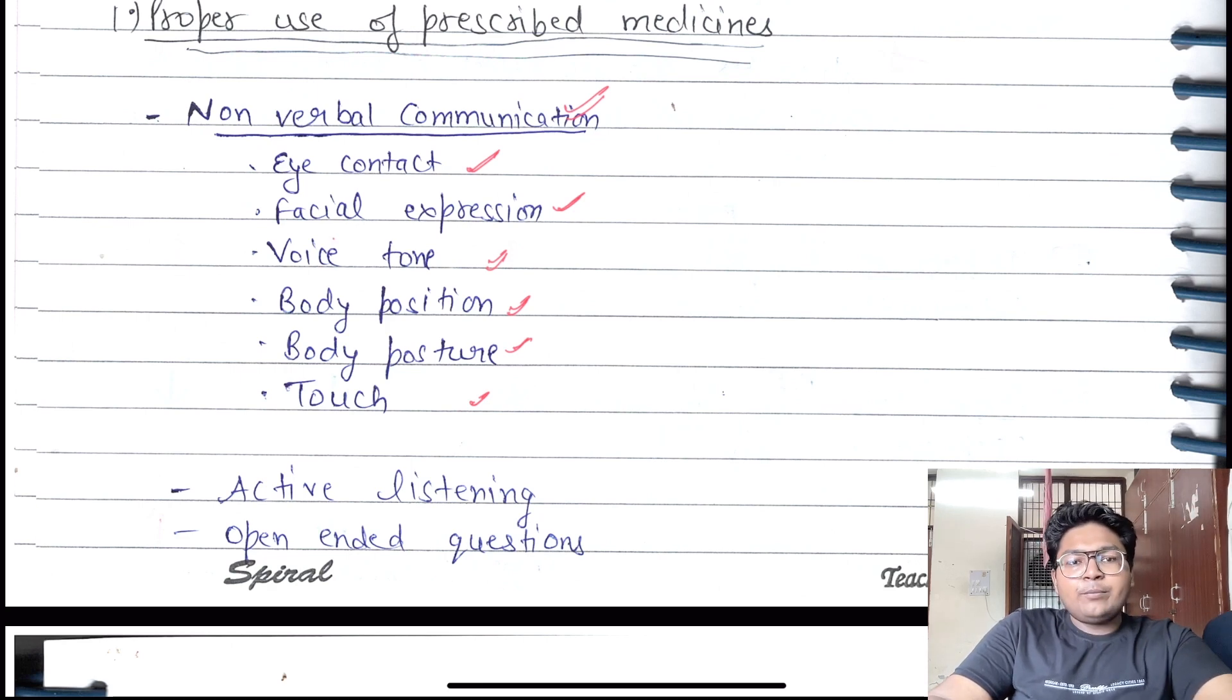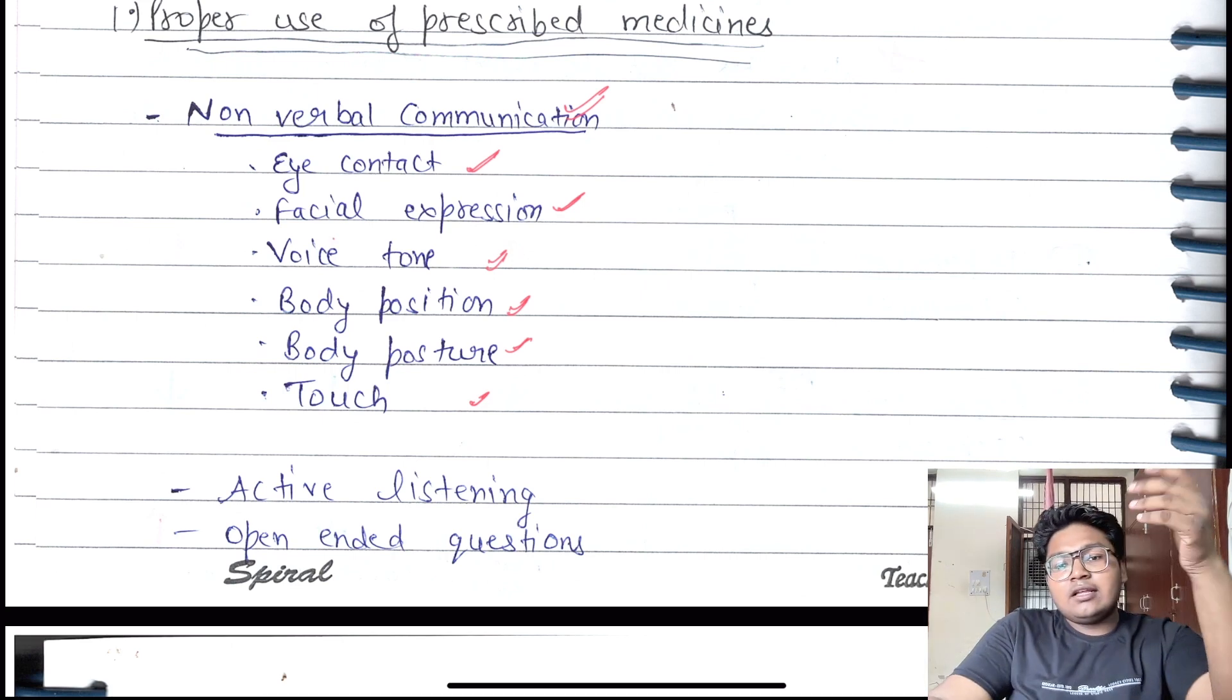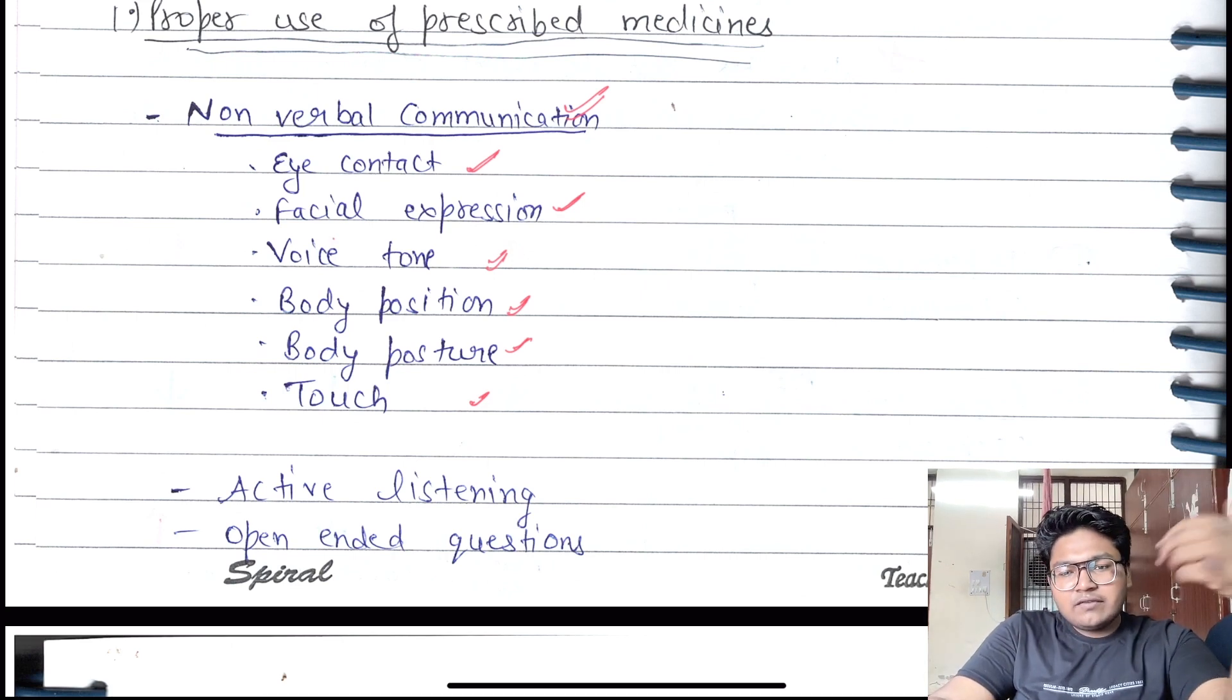Voice tone - whether you are angry, soft, or calm. Body position and posture - if you are just sitting casually while the patient is talking, the patient will lose compliance. Body posture is very important in how you are sitting and behaving with the patient.